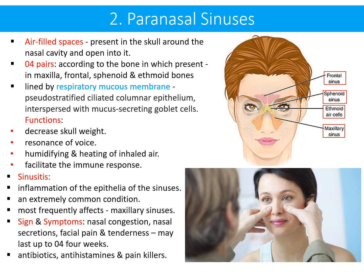If any paranasal sinus becomes infected, it is named sinusitis — inflammation of the epithelial lining of the sinus. It is a very common condition; the most frequently affected sinus is the maxillary sinus. Sinusitis produces nasal congestion, nasal secretions, facial pain and tenderness, and this condition may linger on for up to four weeks. It is usually treated with antibiotics, antihistamines and painkillers.